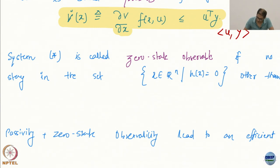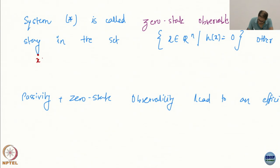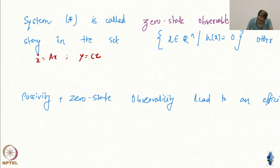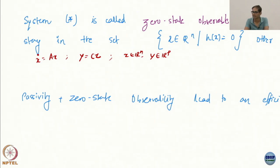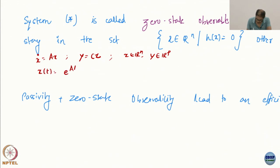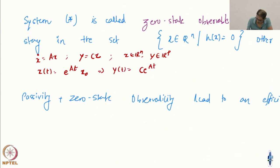Let me try to make sense of it and connect it with our linear system idea. This is our uncontrolled LTI system and a typical output. We assume x in R^n, y in R^p, and typically p will be less than n — fewer measurements than states. Now, the solution is x(t) = e^{At} x_0, and the output is y = C e^{At} x_0.